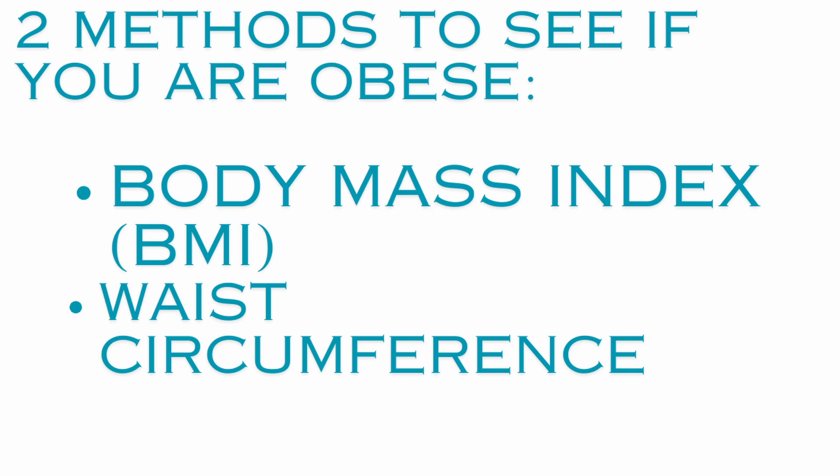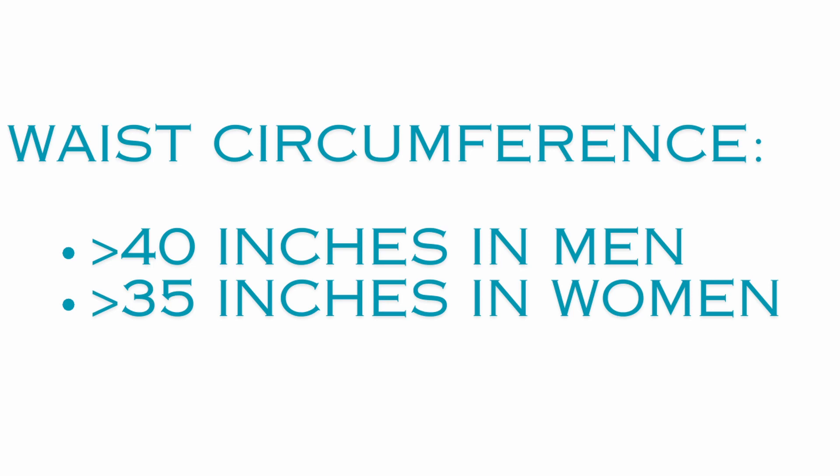In the comfort of your house, take your phone and do a simple calculation to find your body mass index. The second method is waist circumference, which is especially useful for people with a lot of muscle mass like bodybuilders. Simply use a tape measure: if your waist is more than 40 inches and you are a man, you are obese; if it is more than 35 inches and you are a woman, you are also obese.